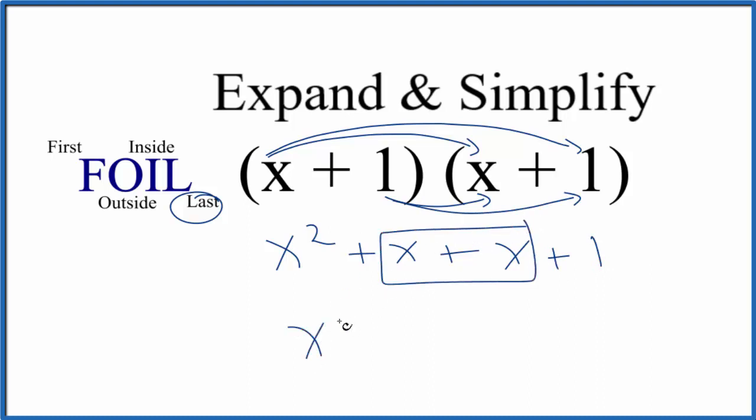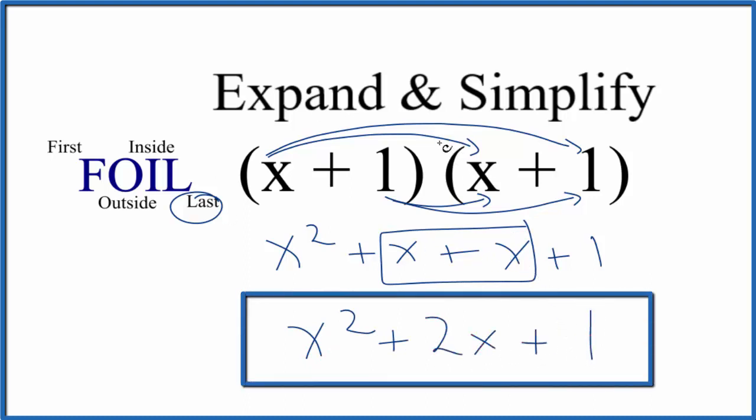Here to simplify, that gives us x squared plus 2x plus 1. So when we expand and simplify x plus 1 squared, or x plus 1 times x plus 1, this is what we end up with.